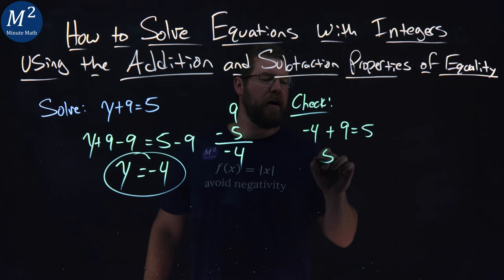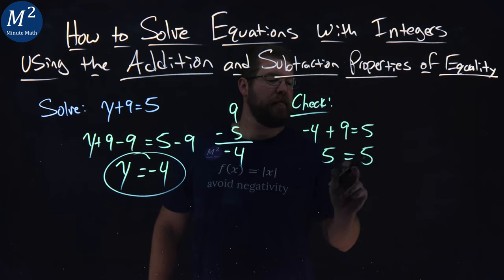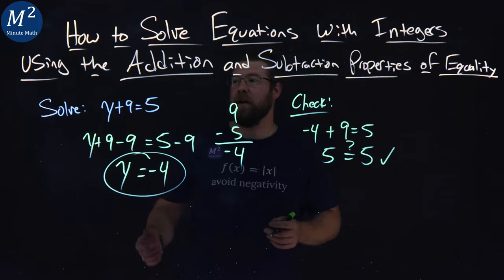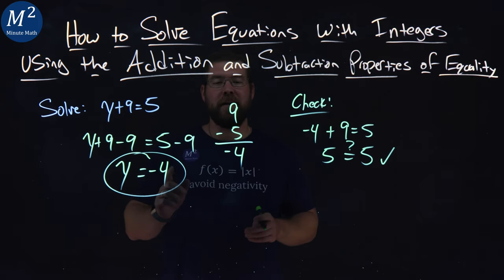Negative 4 plus 9 is a positive 5. And do our left and right-hand sides equal? Yes, it is. So therefore, we confirm that our solution here is y equals negative 4.